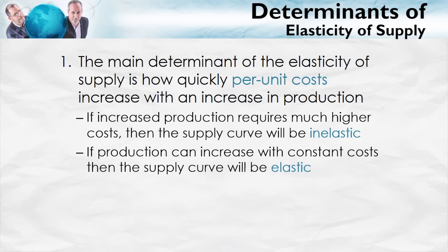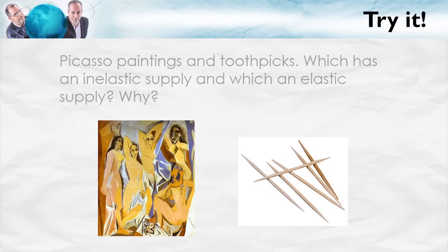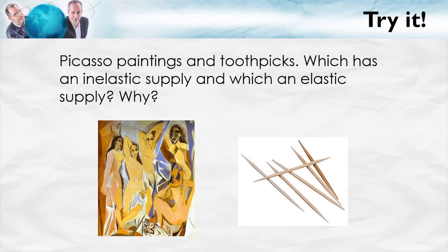Let me give you two examples to make this clear. Compare the following two goods: Picasso paintings and toothpicks. Which has an inelastic supply and which an elastic supply? Let's think about an increase in price. For which good is it easier to expand production? Clearly toothpicks. An increase in the price of toothpicks means you can make many more toothpicks just by running an additional log down the sawmill — many more without an increase in cost.